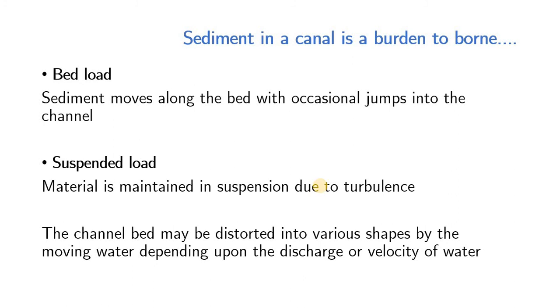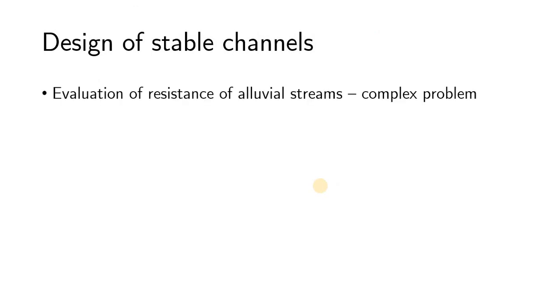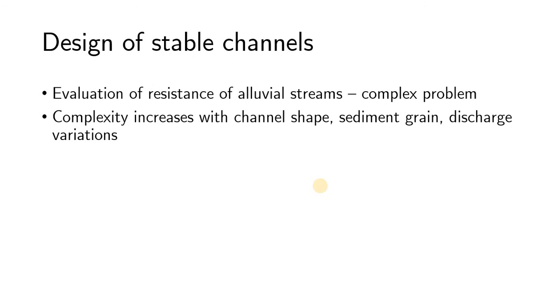As far as design is concerned, velocity is a prime factor, and the design of stable channels follows all these criteria. We have learned many formulae related to capacity determination — it may be Manning's formula, Chezy's formula, or Cutter's formula — that we could directly apply. However, the evaluation of resistance of alluvial streams is a very complex problem, and the complexity increases with channel shape, sediment grain size, discharge variations, and several other factors.